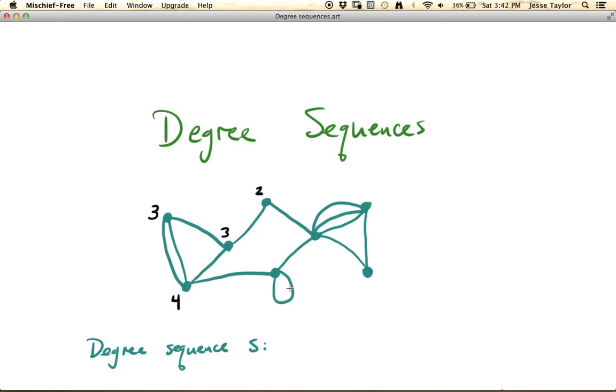Here it will be 2, here it will be 4, because remember we count both ends of a loop in the degree. Here it will be 1, 2, 3, 4, 5, 6, and here 2, and here 4.